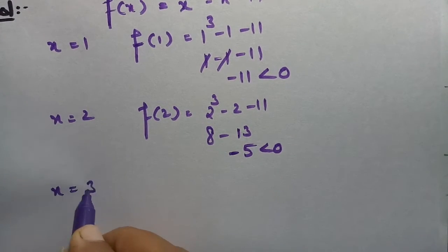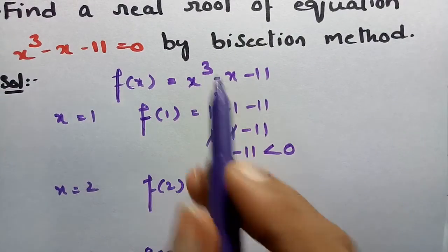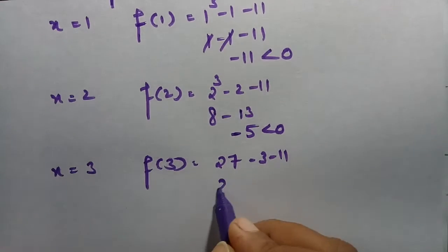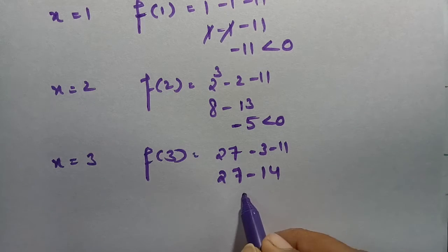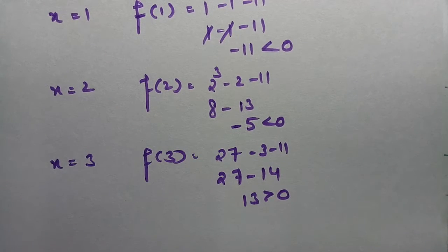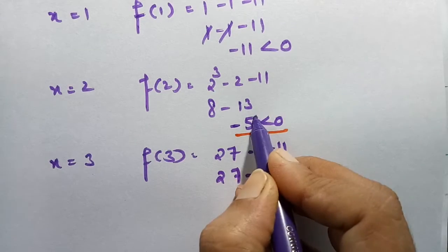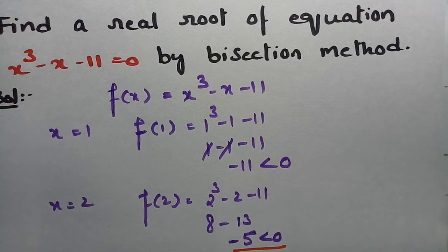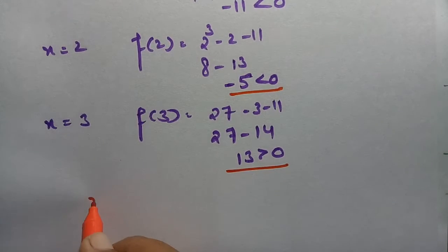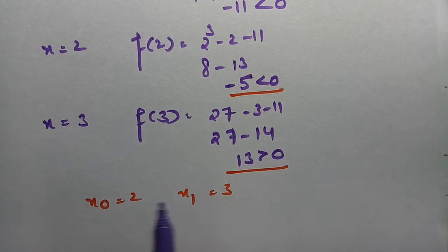Taking x = 3: f(3) = 3 cubed minus 3 minus 11 = 27 minus 14 = 13, which is a positive value. So we get a positive and a negative consecutively, so we stop here. We set x₀ = 2 and x₁ = 3. Therefore the real root lies between 2 and 3.